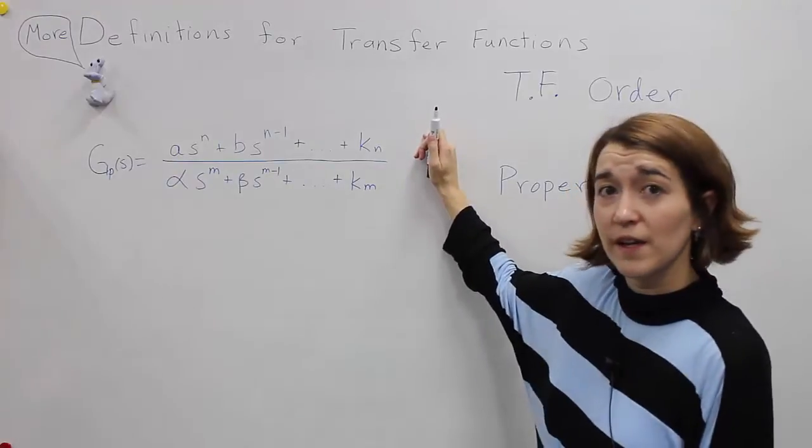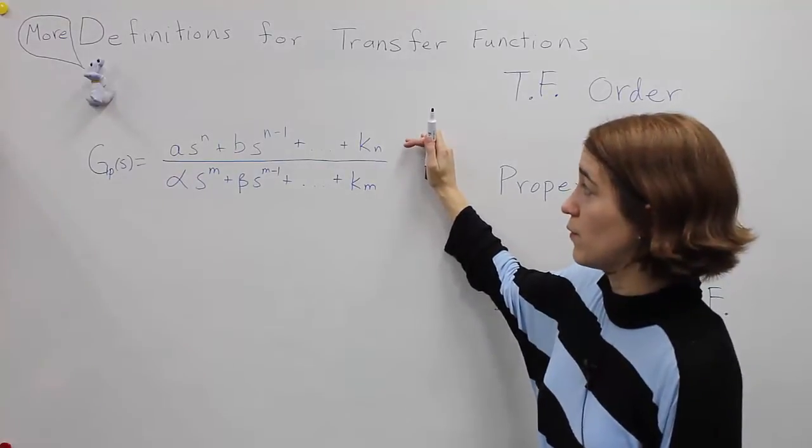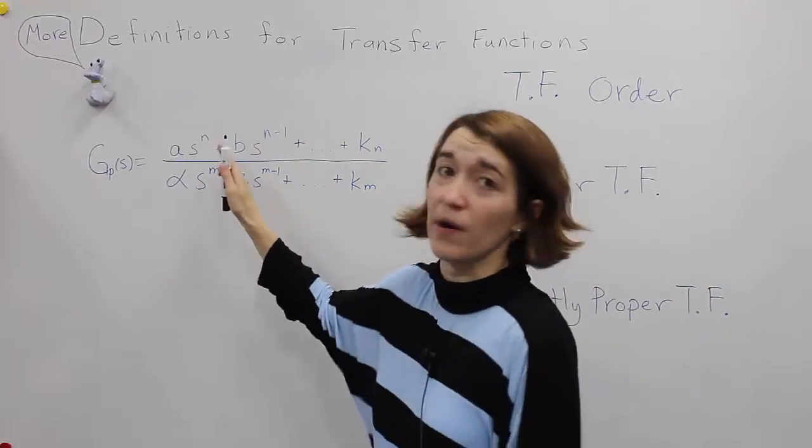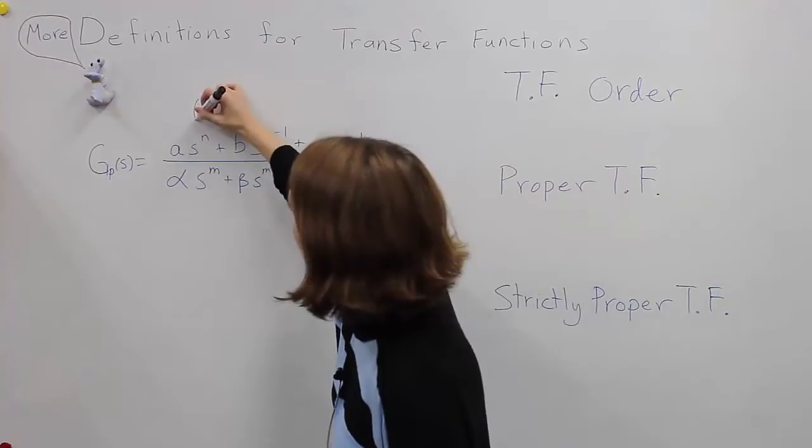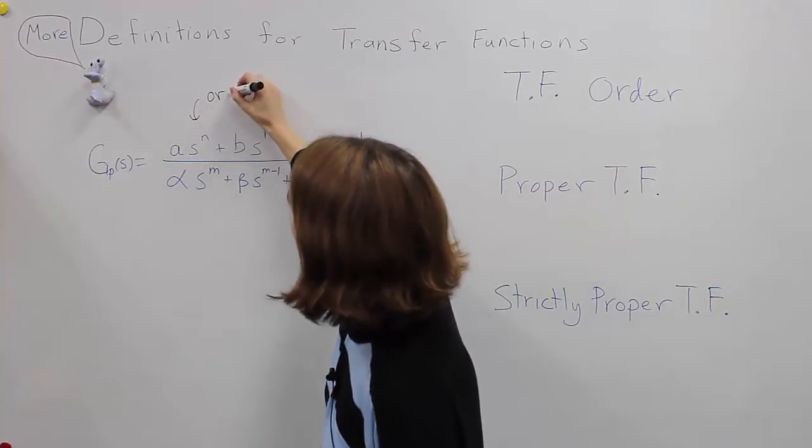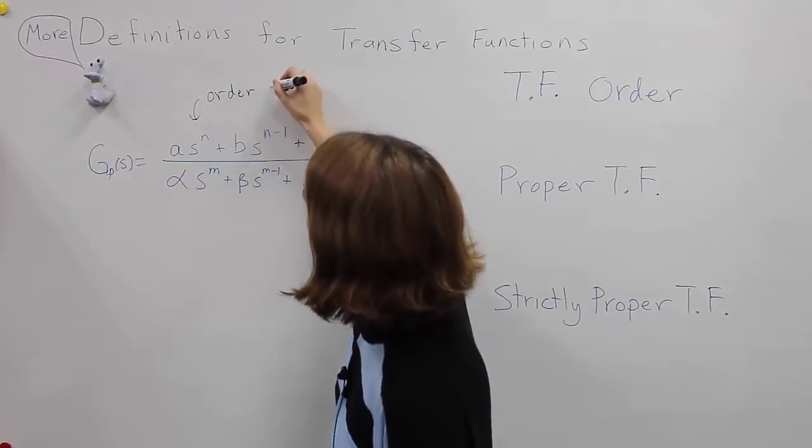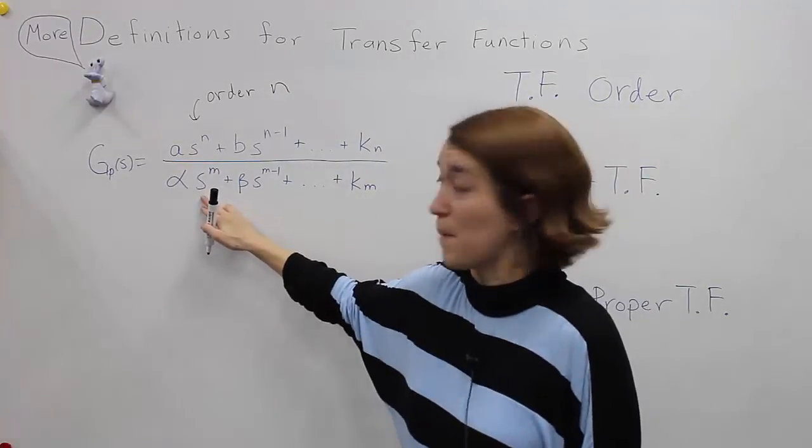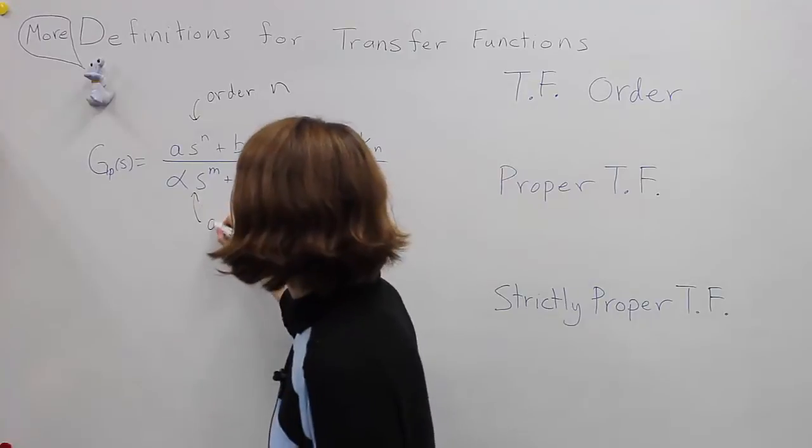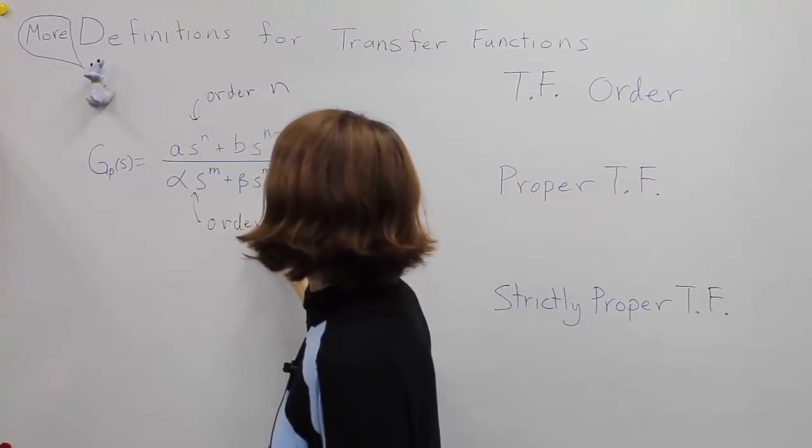If we want to find the order of each one, we can look at the highest power of s to determine the order. So for the numerator, the order here is n. And for the denominator, look at the highest power of s, it's m, so this would be order m.